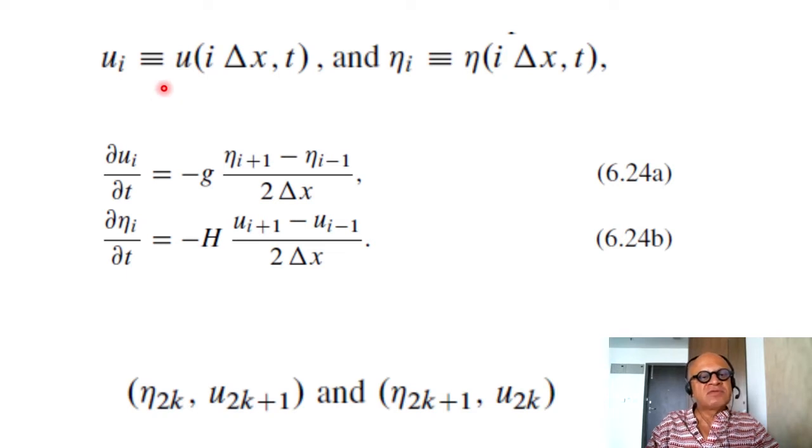So ui is equivalent to u at i delta x at any point at time t and eta i is also at eta i delta x at t. So we are computing u and eta at the same point in x and we are writing the discretization as du i dt and d eta i dt with second order estimates. That's writing d eta dx in a second order differential equation, second order accuracy.